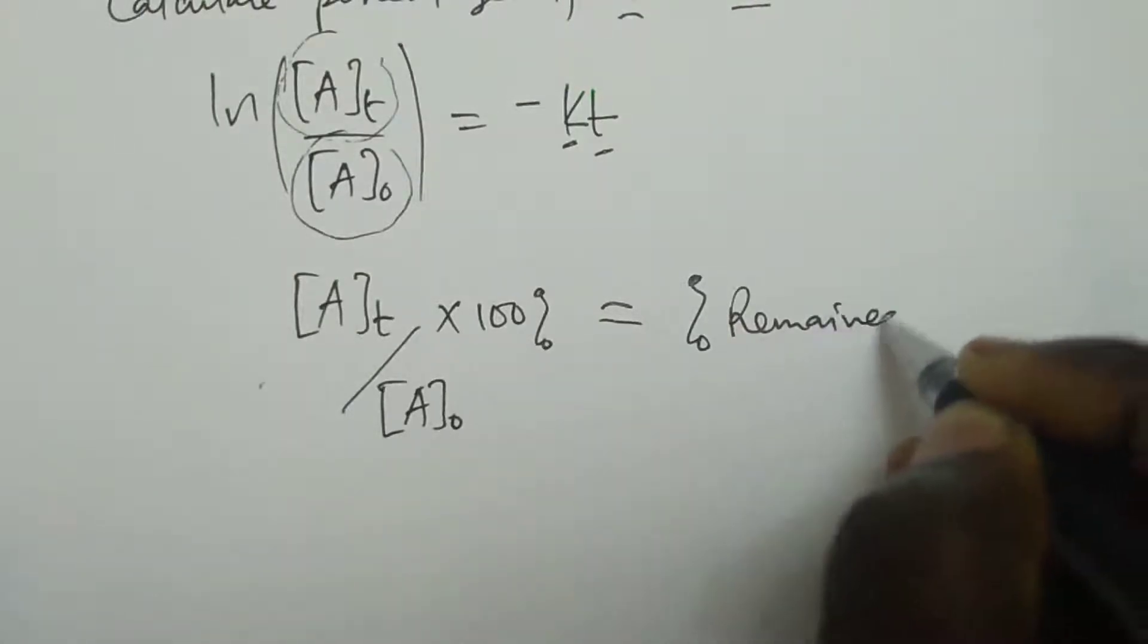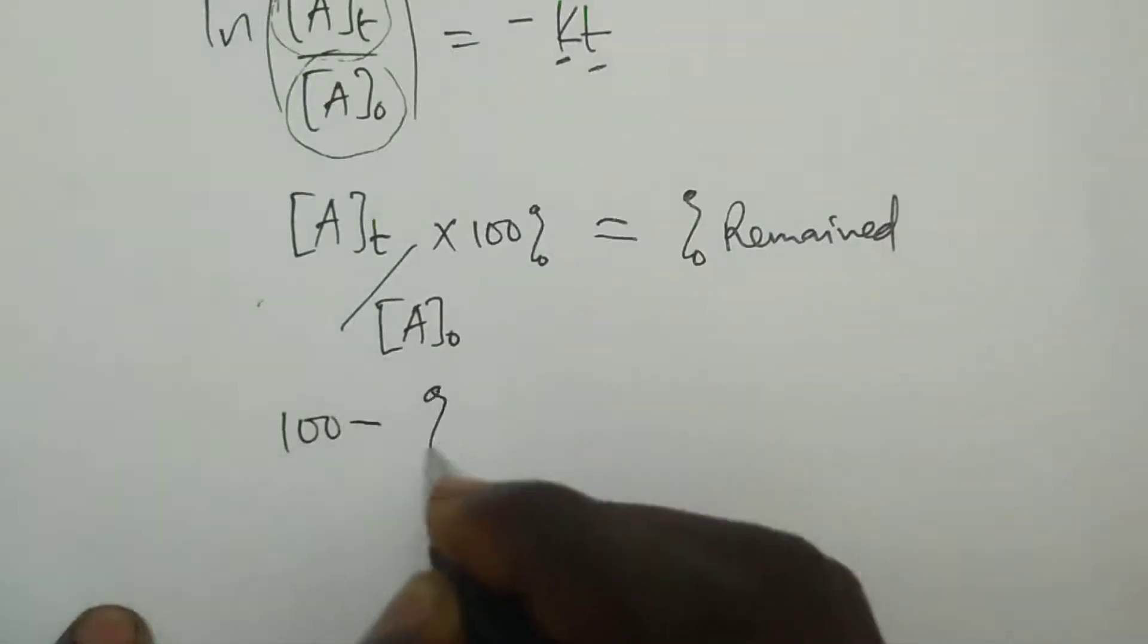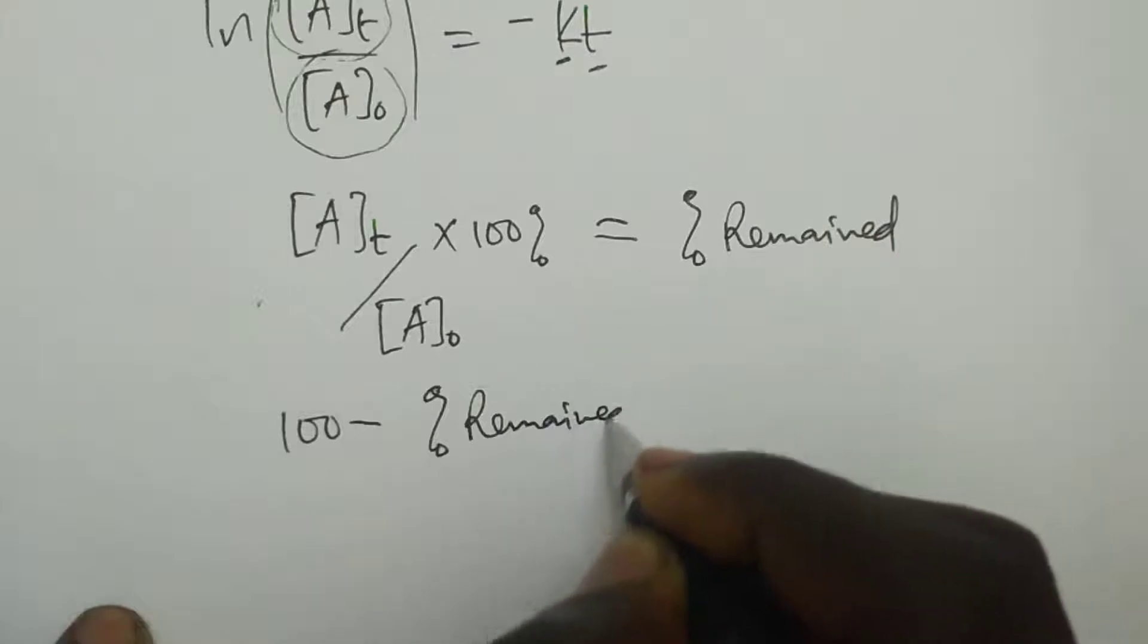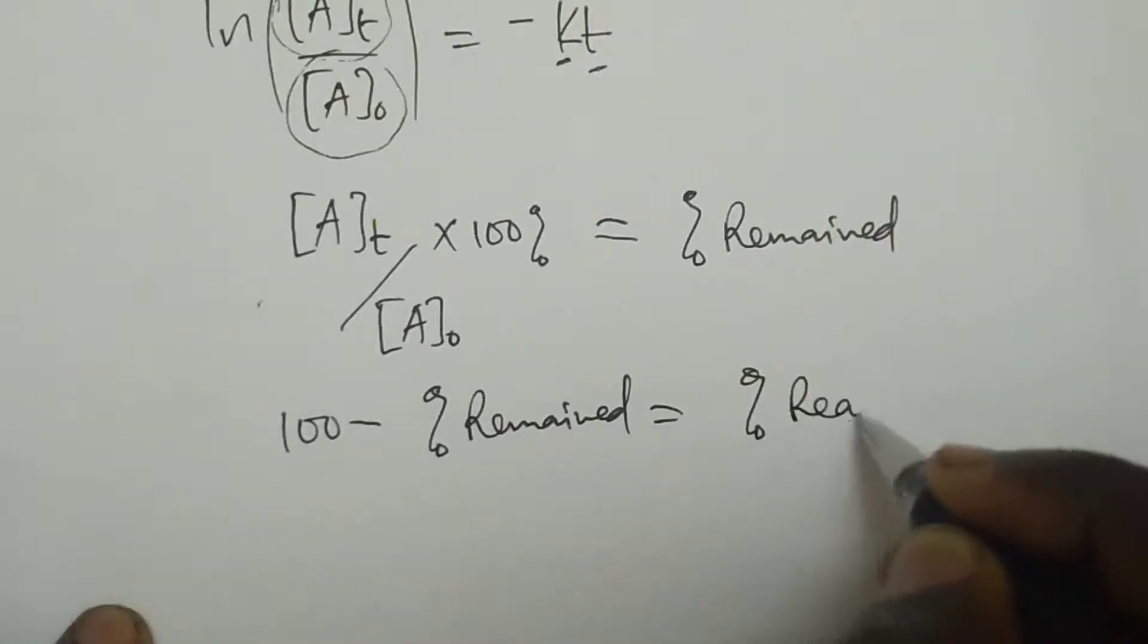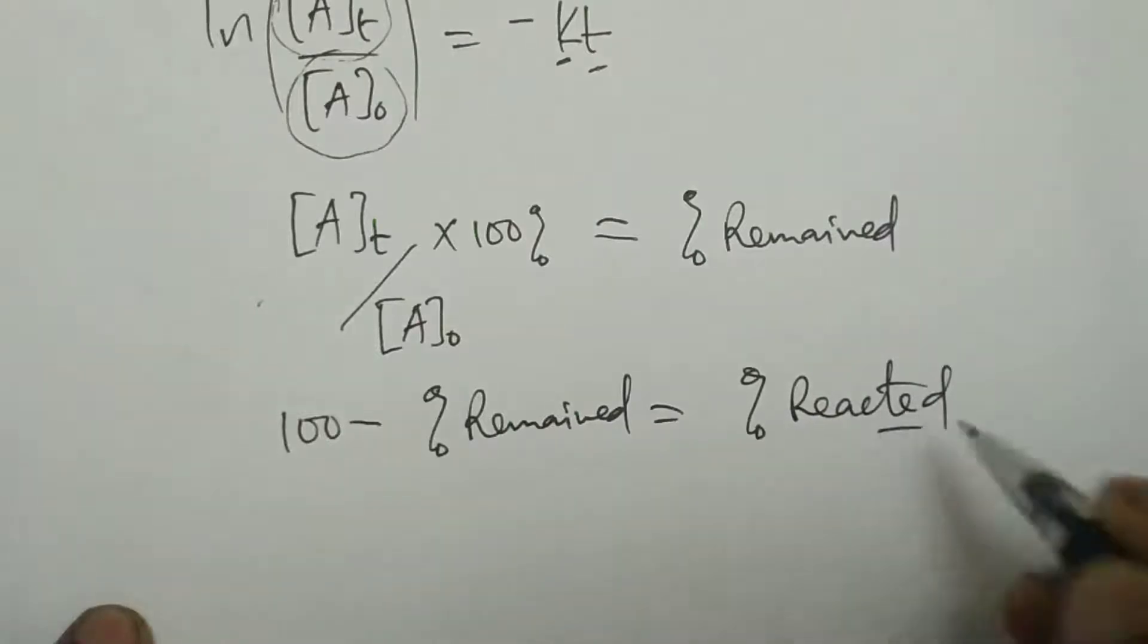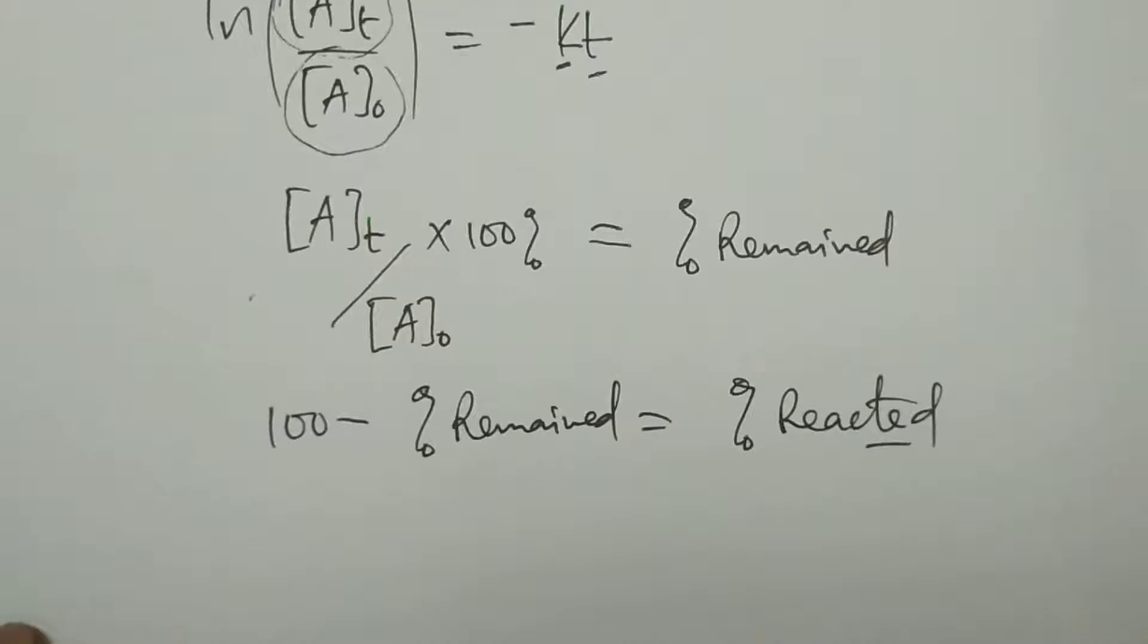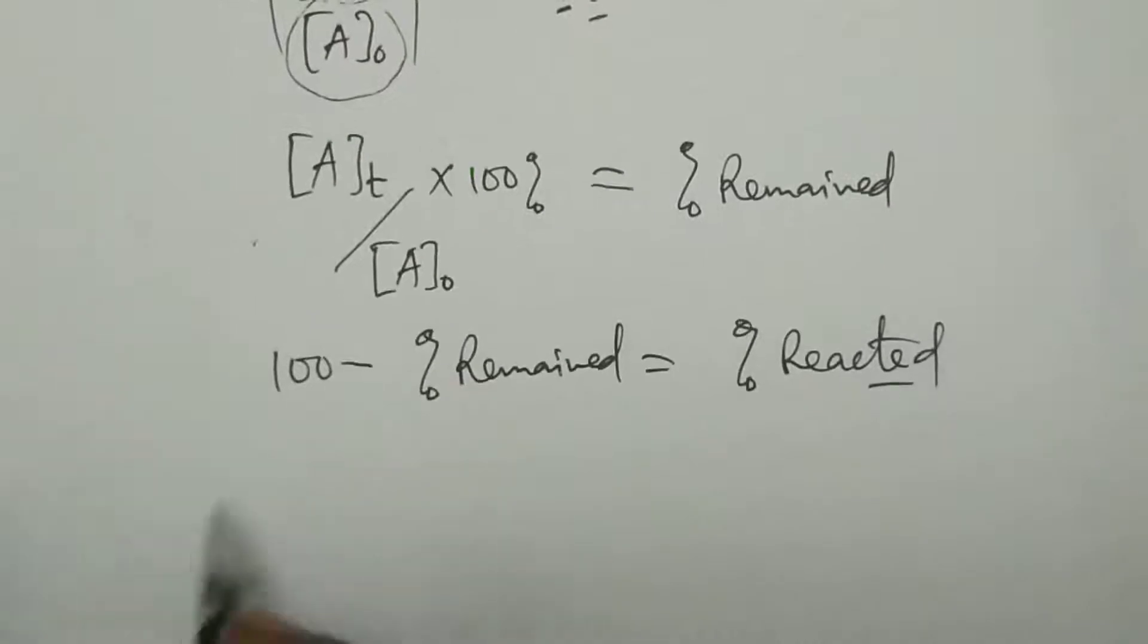Then, we will calculate percentage remained. Percentage remained. Then, we will take 100 minus percentage remained. It will be the same as percentage reacted. Percentage reacted. This is the way these questions of first order are done.